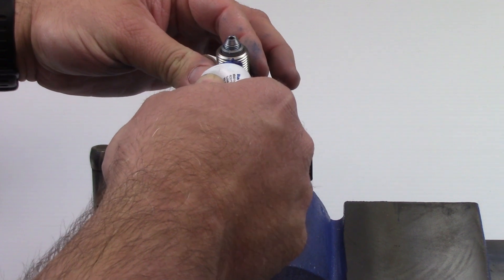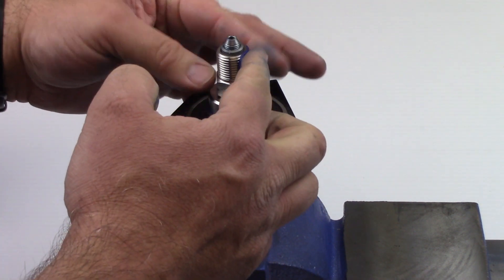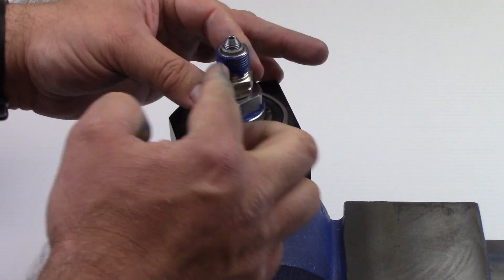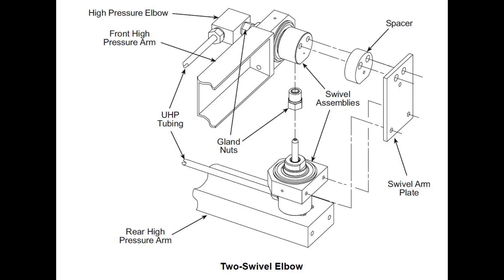Lubricate the threads of the gland nut with precision lubricant. Reinstall the swivel assembly onto the equipment.